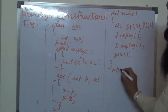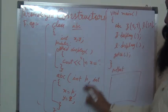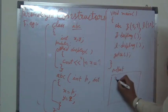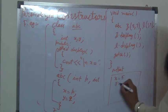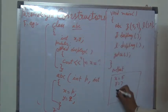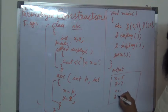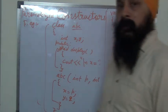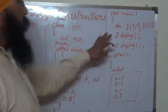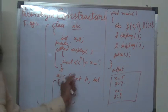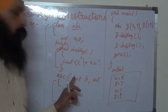The output of this program will be: x is equal to 5 and y is equal to 7 for object z. And l.display will print x is equal to 1 and y is equal to 9. The key difference between the default and parameterized constructor is that in the default constructor, there should be no arguments.